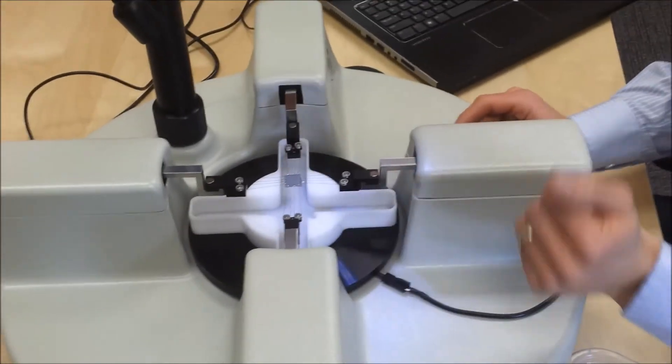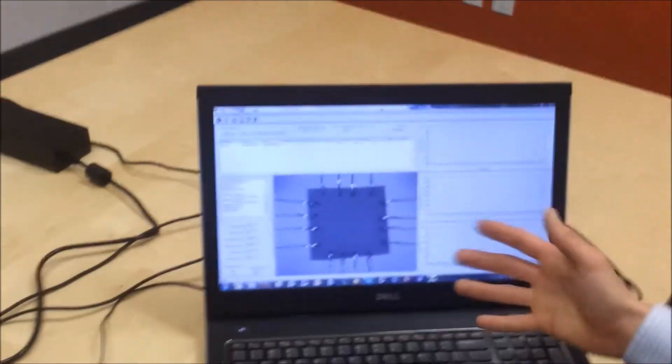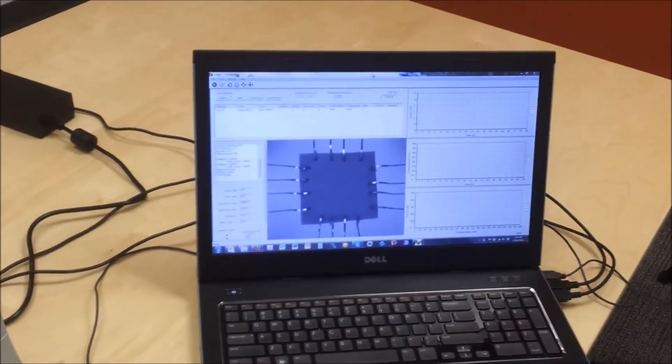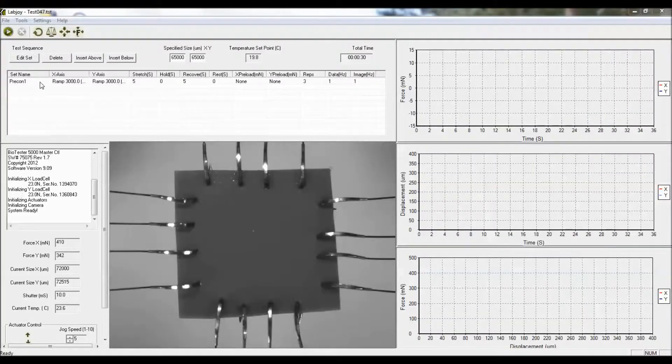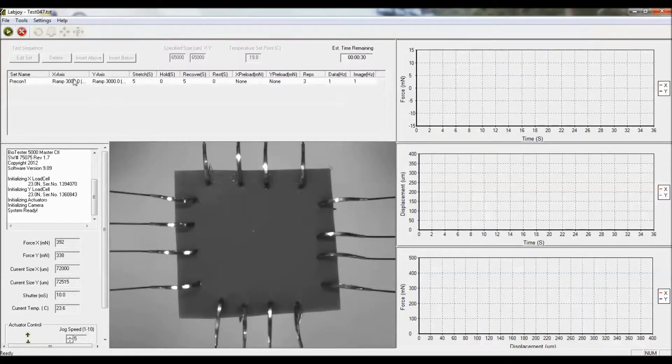Now that we've got the specimen mounted, we're going to go over to the computer here, and we can see on screen that we do have the specimen showing up in the middle of the screen. And this test is ready to run. In this case, I've specified a test that has a ramp of three millimeters in five seconds. I'm just repeating that three times. So I'm going to execute this test.